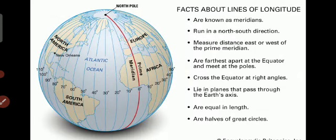Now we come to the lines of longitude, also known as meridians. Longitude is the angular distance of a point on the surface of the earth, measured in degrees east or west from the prime meridian. Lines of longitude are known as meridians — meaning midday, which is the halfway point of the sun's journey between sunrise and sunset. They run in a north-to-south direction and are measured east or west of the prime meridian. They are farthest apart at the equator and meet at the poles, crossing the equator at right angles.